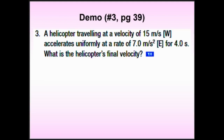Problem two: a helicopter traveling at 15 meters per second west accelerates uniformly — we can only handle uniform acceleration, otherwise you'd need calculus — at 7 meters per second squared east. If I'm moving west but my acceleration is east, I'm actually decelerating. Since we designate motion direction (west) as positive, the eastward acceleration is negative — so the acceleration is −7 m/s².